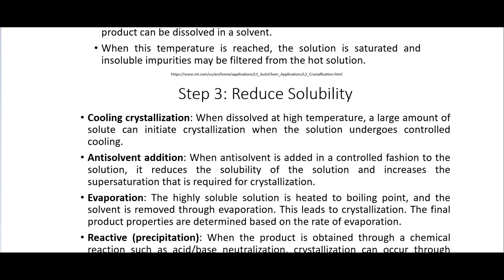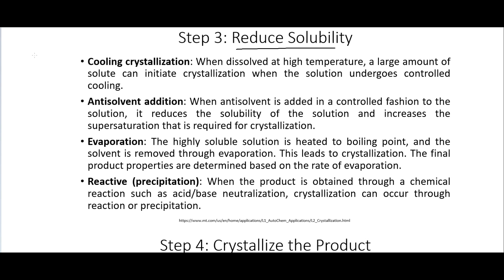Step three is to reduce the solubility. Cooling crystallization is very common — when dissolved at a high temperature, a large amount of solute can initiate crystallization when the solution undergoes controlled cooling. You can also use an anti-solvent by adding a solvent in which your product is not very soluble, which will reduce its solubility and cause it to come out of solution as a crystal. You can also evaporate some solvent, or use a reactive precipitation reaction.